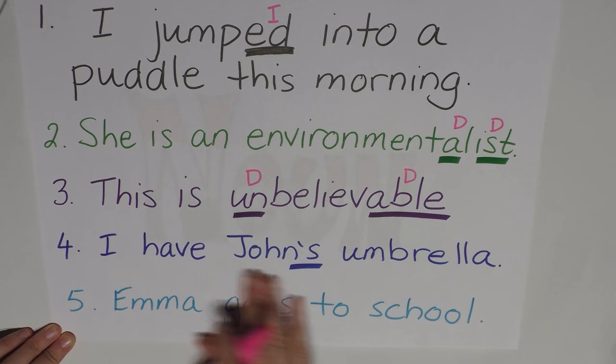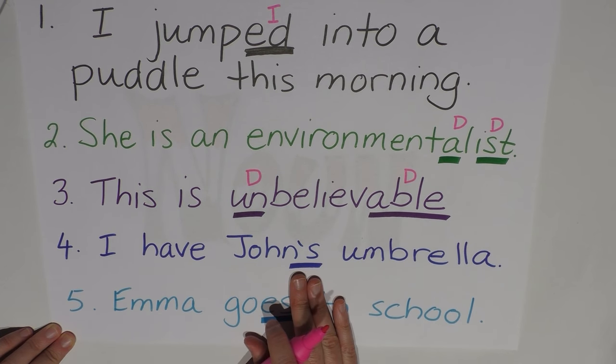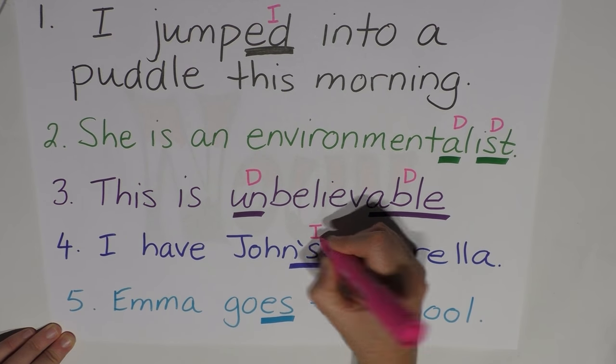We have, I have John's umbrella. So this is an apostrophe S showing possession, as in whose umbrella is it? It's John's umbrella. So this is a grammatical change or an inflectional change.